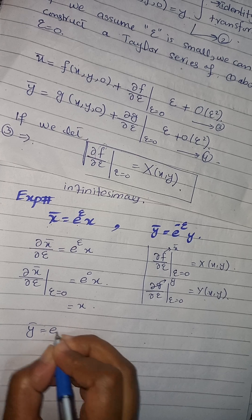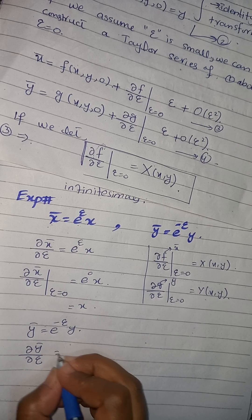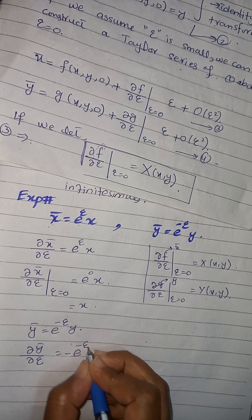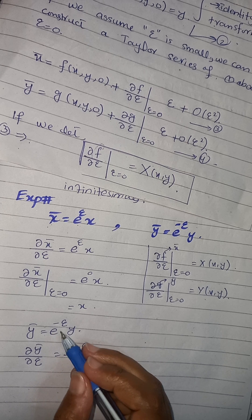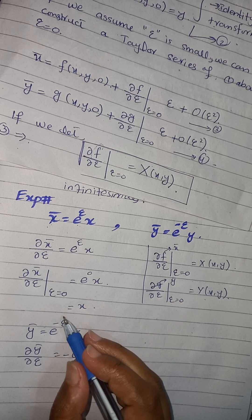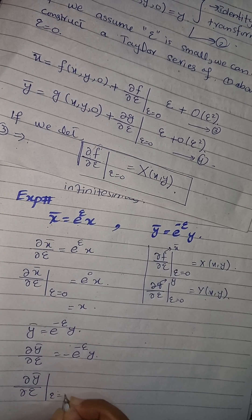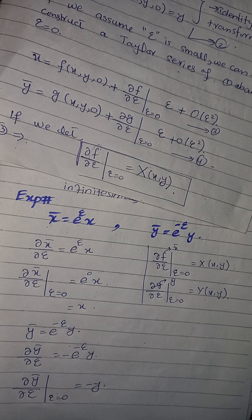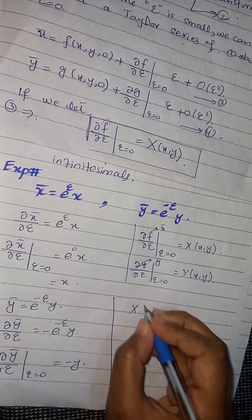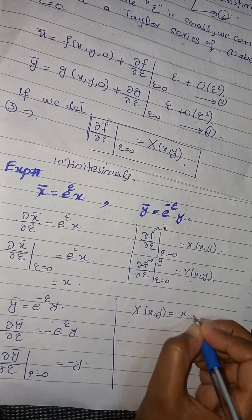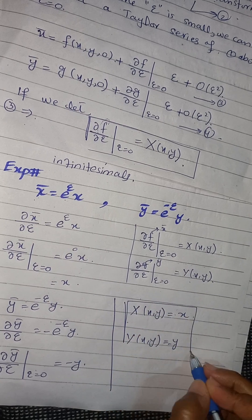If you find partial x-bar over partial epsilon at epsilon equals zero, then e raised to the power zero equals one, so you get x. Similarly, for y-bar equals e raised to the power minus epsilon times y, taking the partial derivative with respect to epsilon gives minus e raised to the power minus epsilon times y. So partial y-bar over partial epsilon at epsilon equals zero equals minus y. Therefore, capital X(x, y) equals x and capital Y(x, y) equals minus y. These are the required infinitesimals.